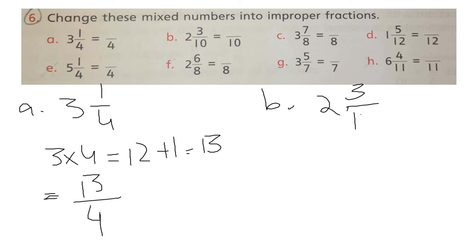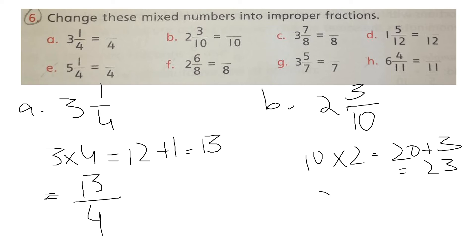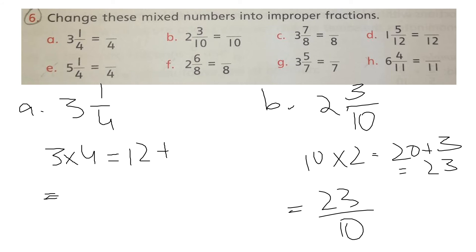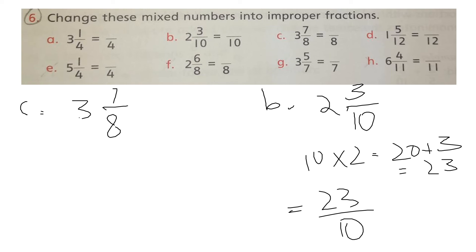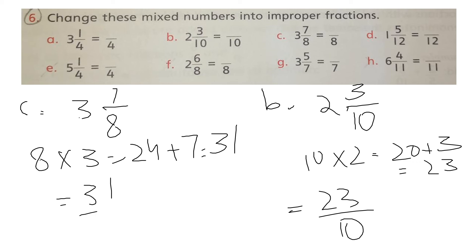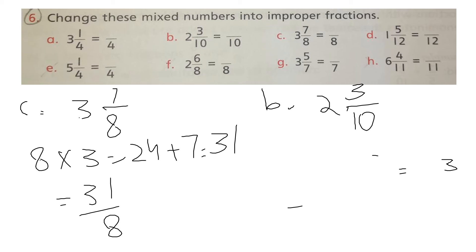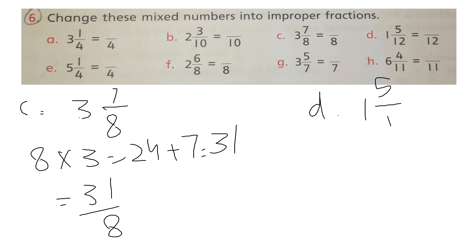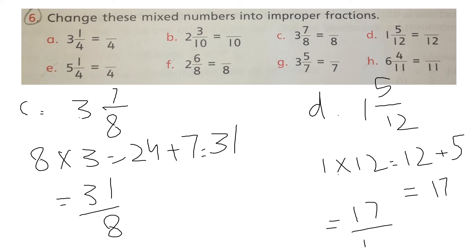Part C: 3 whole 7 by 8. Multiply 8 by 3 to get 24, then add 7 to get 31. The answer is 31 by 8. Part D: 1 whole 5 by 12. Multiply 1 by 12 to get 12, then add 5 to get 17. The answer is 17 by 12. The remaining parts are your homework.